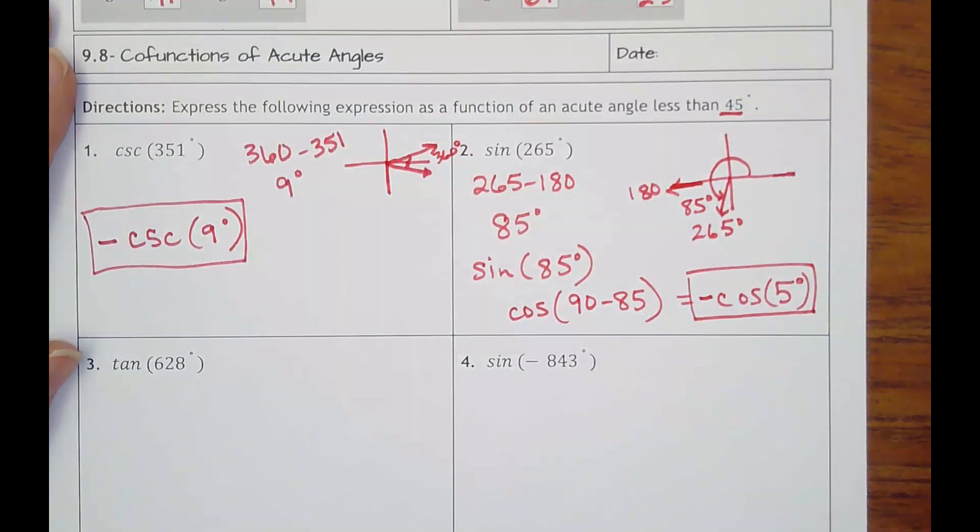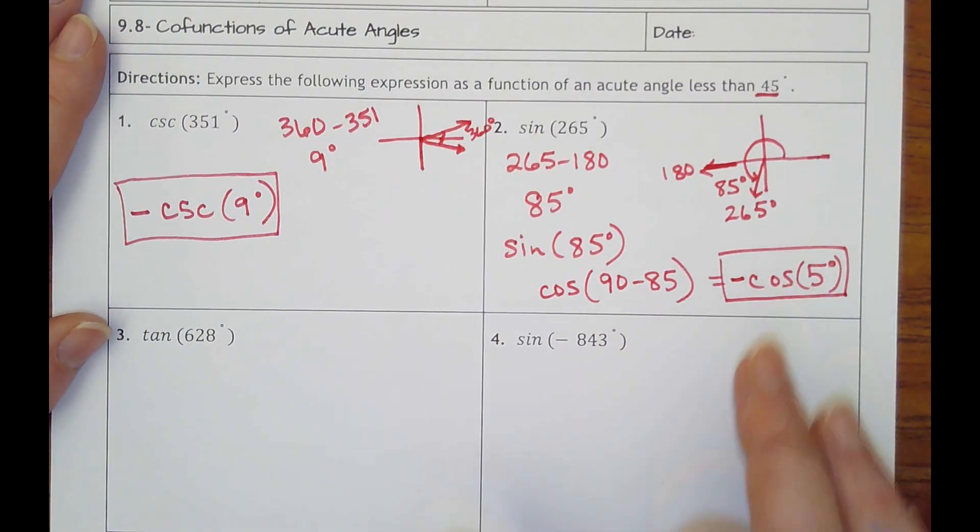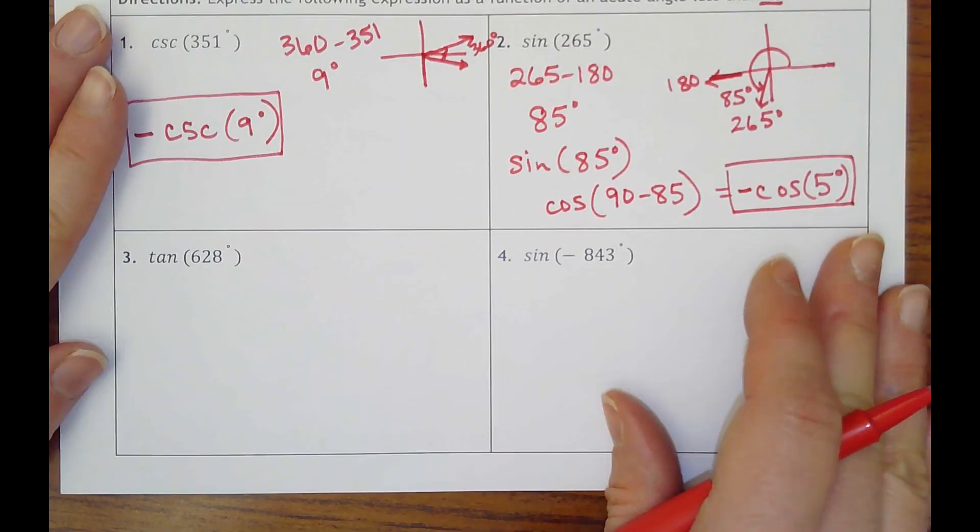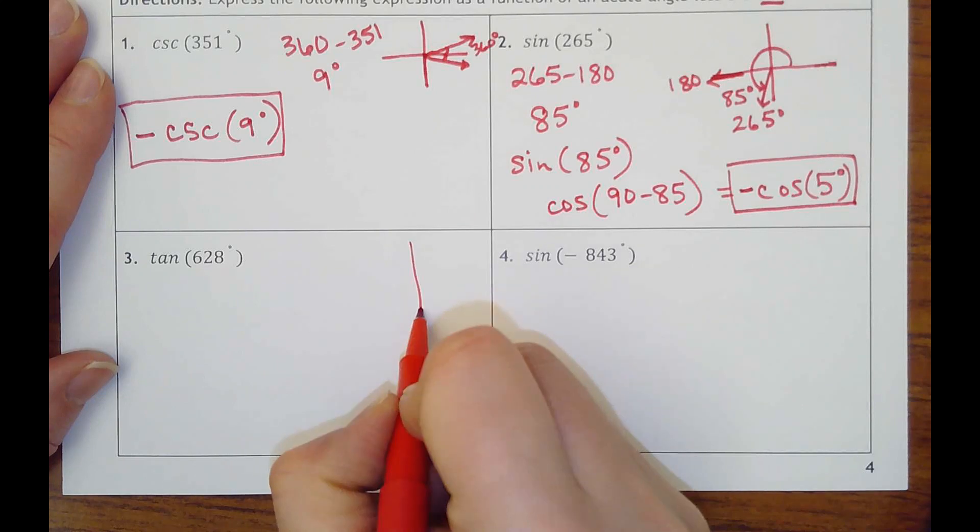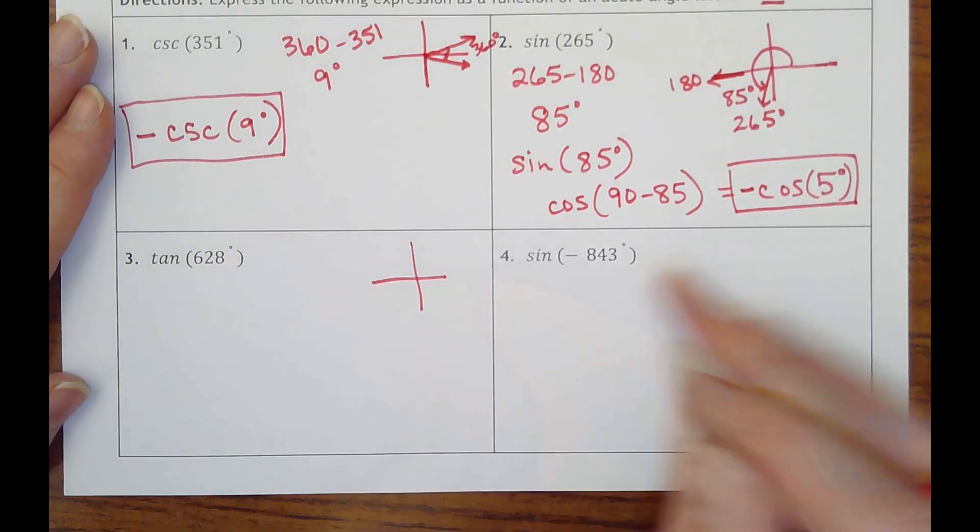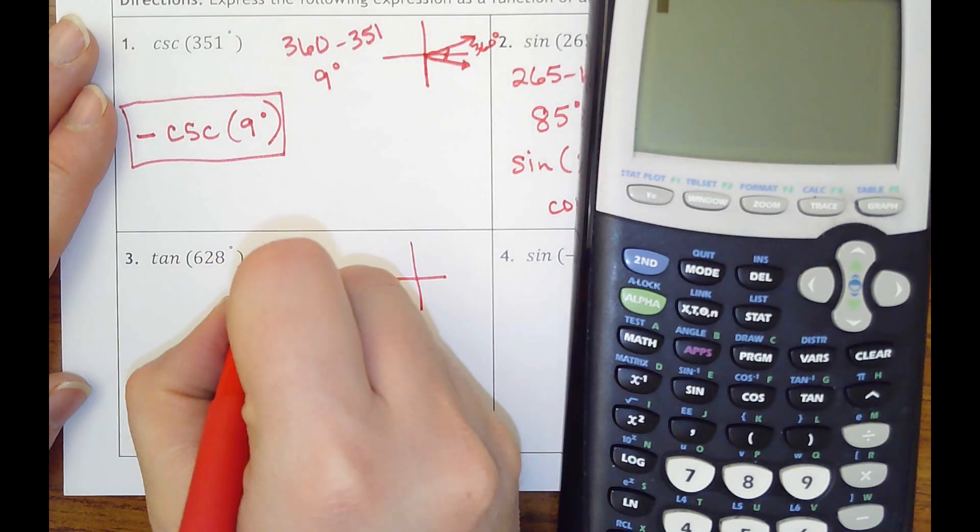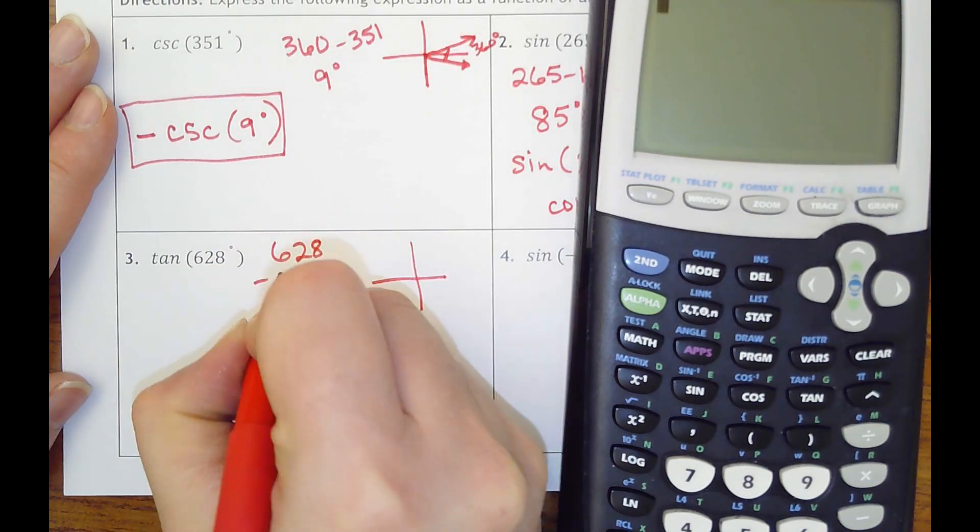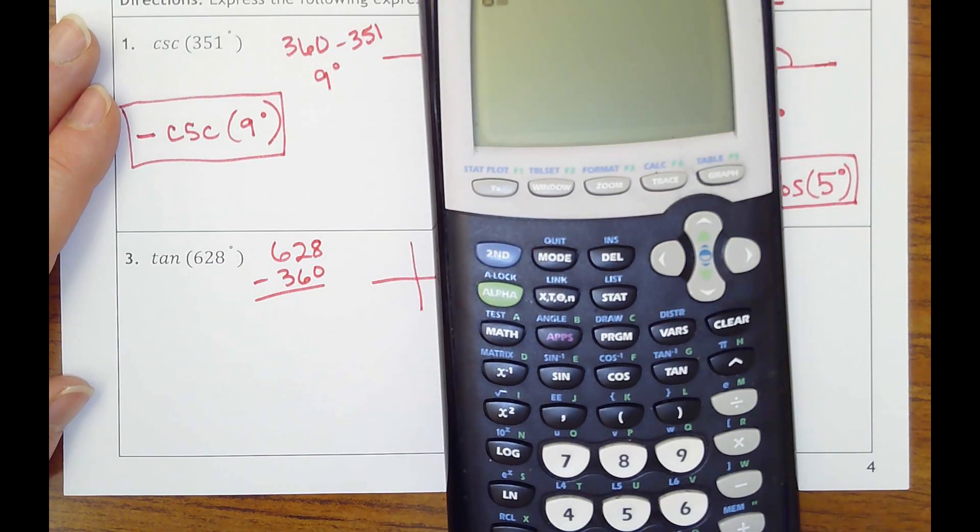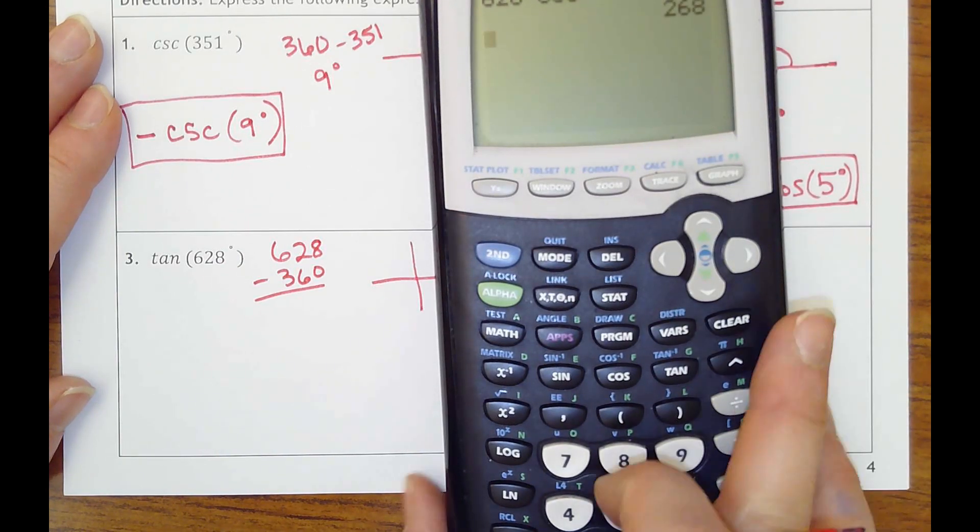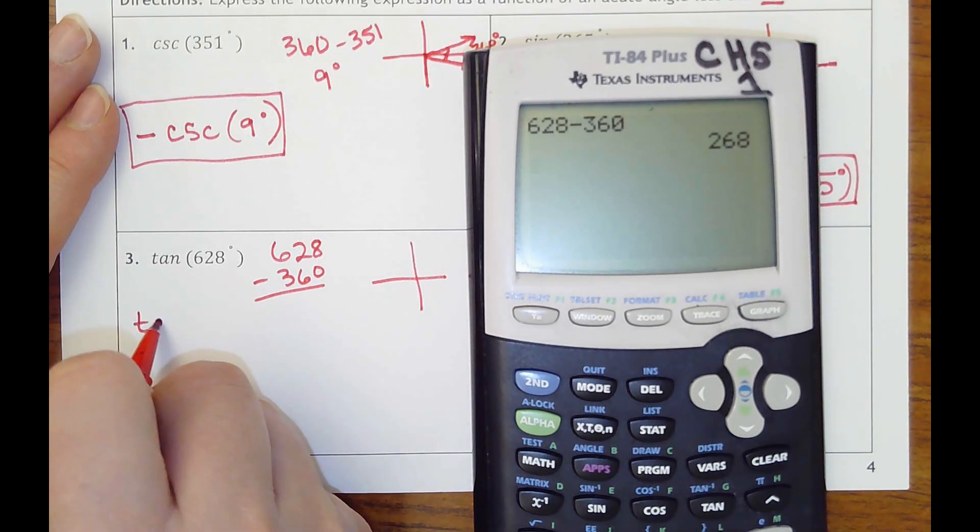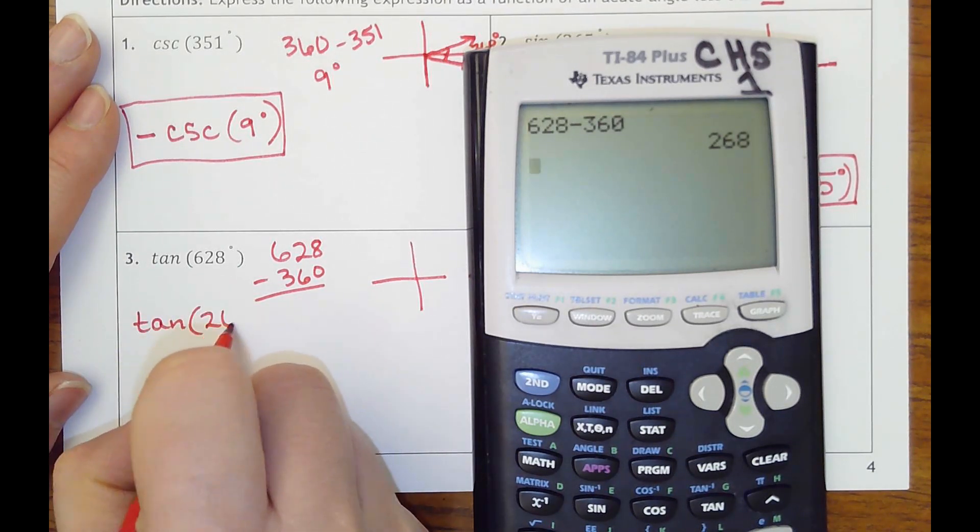Number three is tangent of 628. Hope you remember co-terminal angles mean I can go around the unit circle as many times as I want. So what I really want to do is just start subtracting complete revolutions. So I'm going to subtract 360 from that. So then I do get a number smaller than 360. So really this is the same as tangent of 268. It's weird that it's the same digits in a different order.